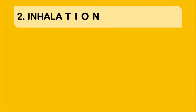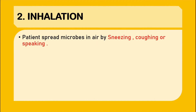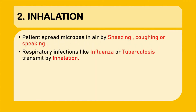The next mode is inhalation. Inhalation is mainly concerned with diseases transmitted by the respiratory tract, where the patient spreads microbes in the air while sneezing, coughing, or speaking. These microorganisms enter the environment, and if anybody comes in contact with that person, the infection spreads in the form of droplets. Respiratory infections like influenza or tuberculosis are transmitted by inhalation of particles spread in the environment. A current best example is the pandemic disease COVID-19, which is mainly spread by the inhalation mode of transmission.